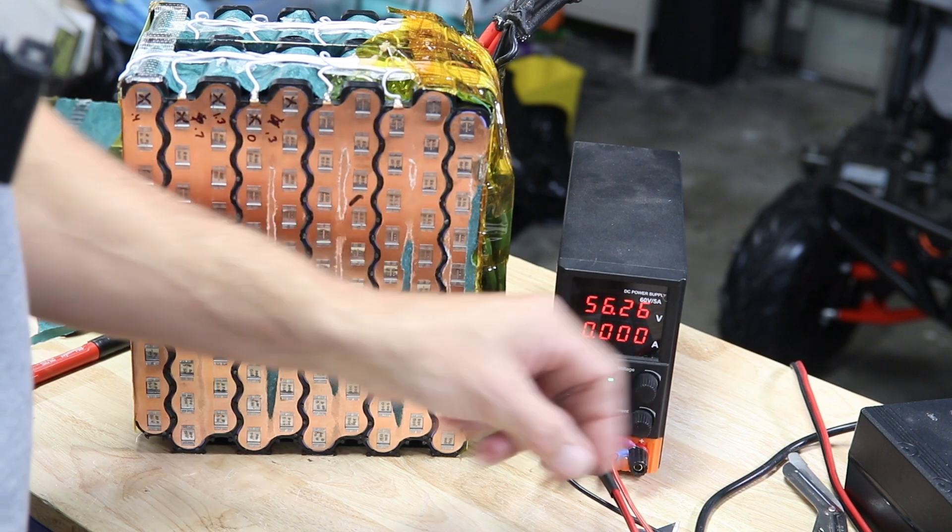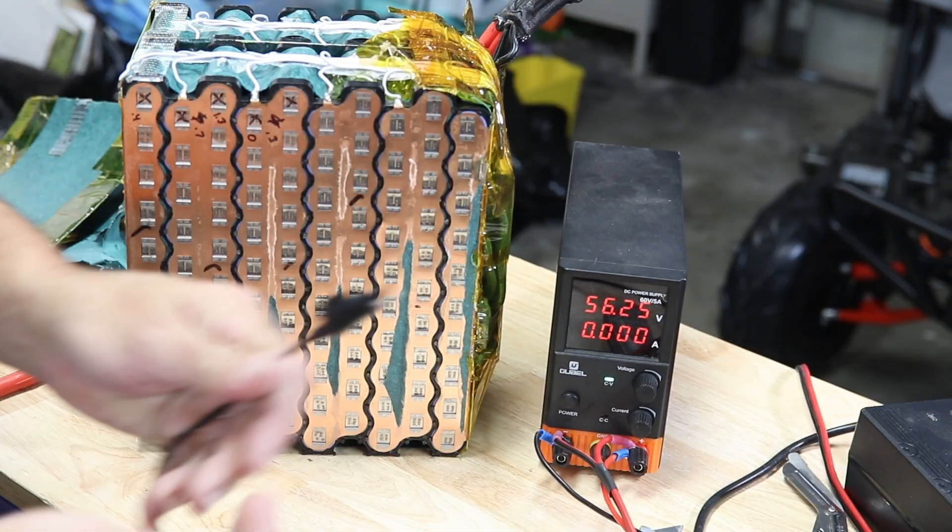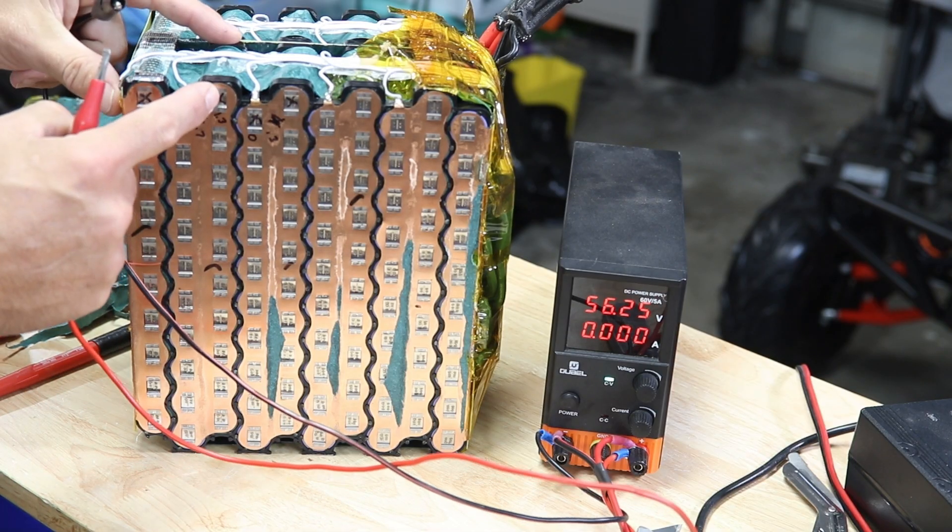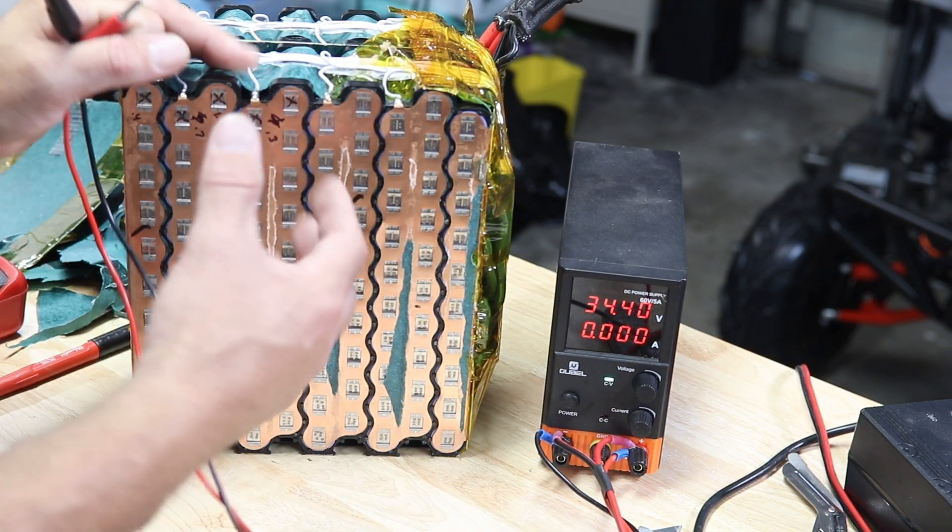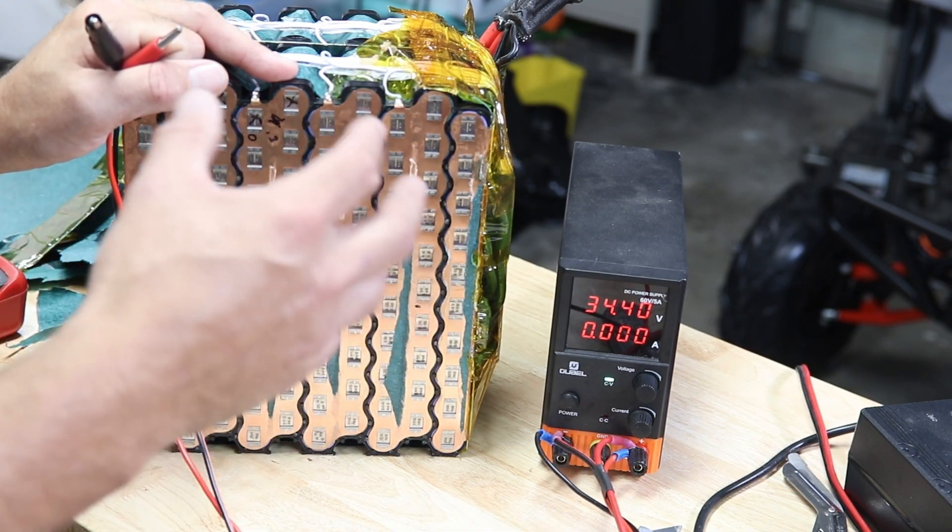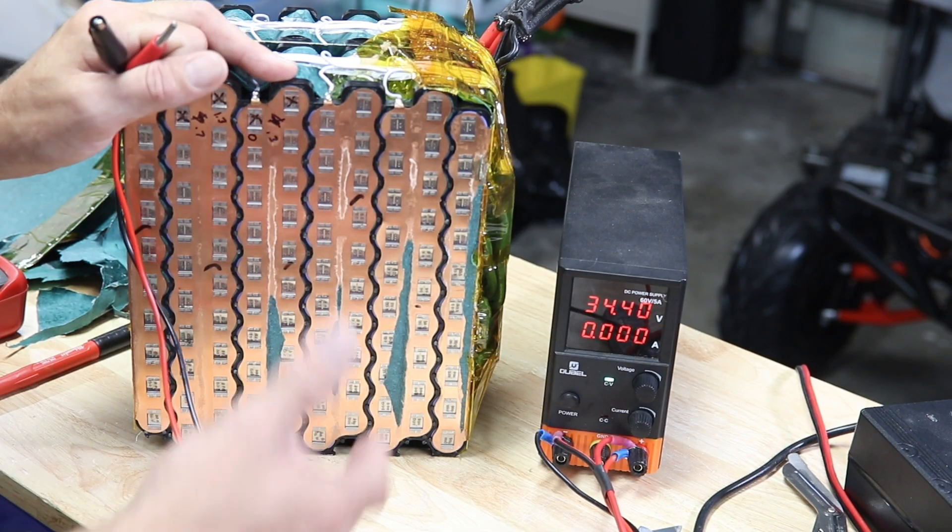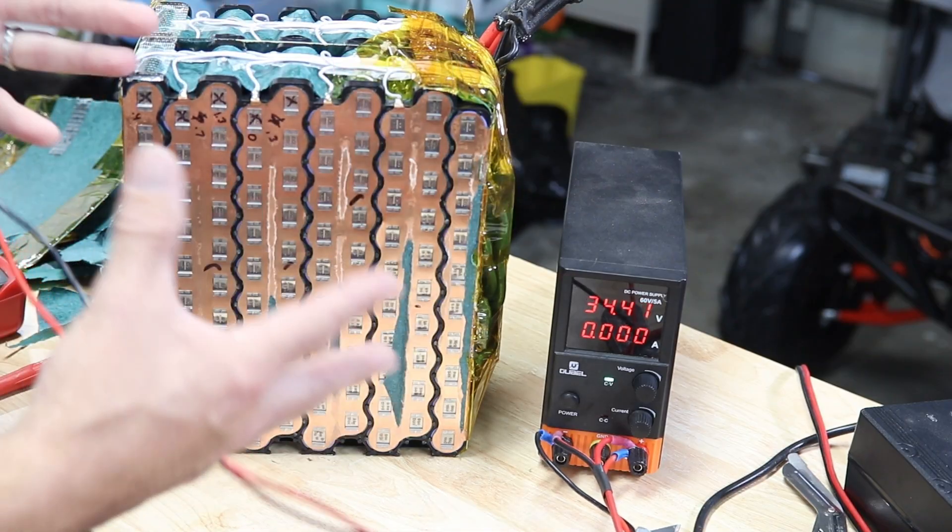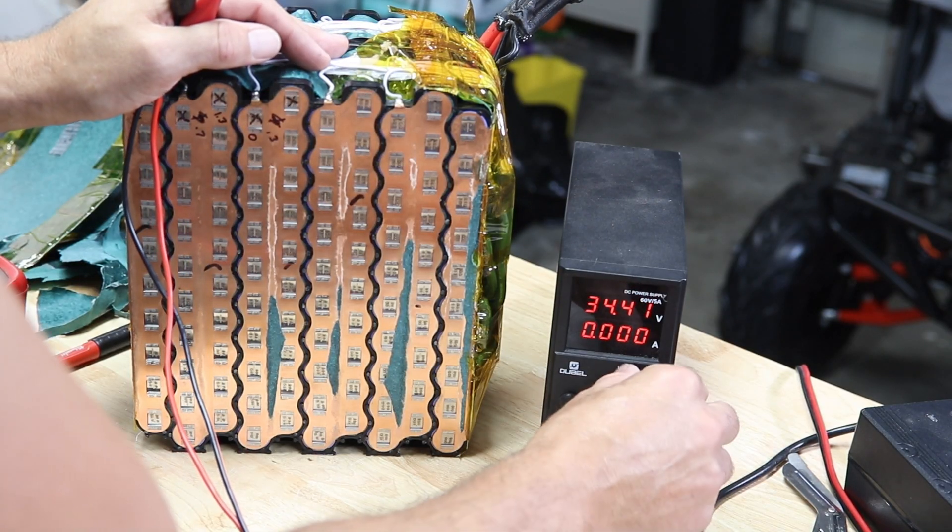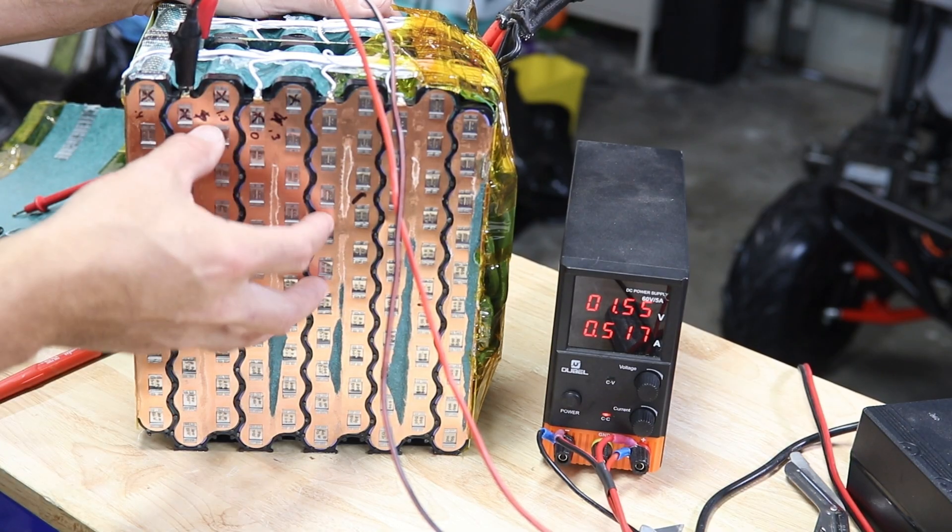So what you're going to need is a variable power supply and we're going to get our positive and negative and we're going to connect that to each one of these groups. We're going to give it a nice slow charge. So I'm going to charge it up to about 3.2 volts to kind of match all the rest and then we're going to activate the balancer in the BMS and hopefully bring this whole pack to life.